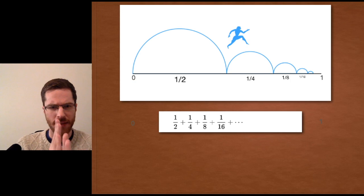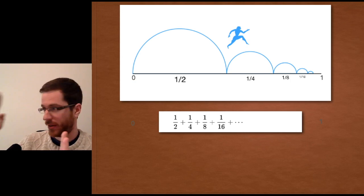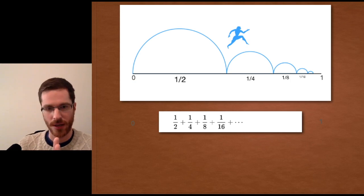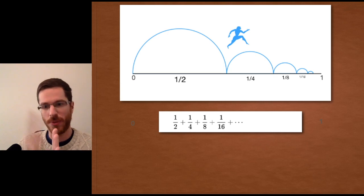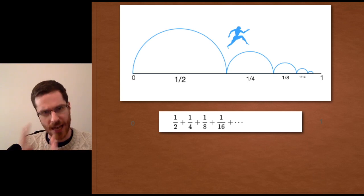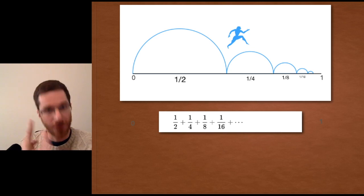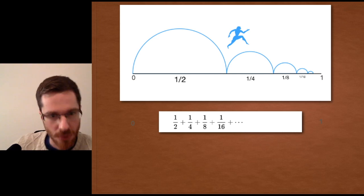So he has to go a half. And then from that halfway point to the number one, he has to go half of that distance, which would be a half of a half, which is a quarter. And then from that point, he still has half the distance remaining. So he has to go an eighth of the distance. Then he has to go a sixteenth of the distance. Then he has to go a thirty-second of the distance, and so on.